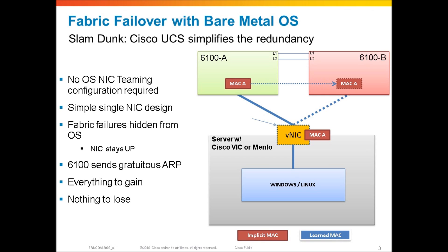All of that goes away now with Fabric Failover. We can provision a single VNIC, a single adapter to this server. So you've got a Windows or Linux machine with a single 10 gig adapter and the high availability is absorbed into UCS with Fabric Failover. You've got a MAC address on that adapter — MAC address A. MAC address A is an implicit MAC on the Fabric Interconnect, meaning it was authoritatively known — defined in the service profile used to configure this server. It's not a MAC address that was really learned by the Fabric Interconnect; it was just known when you instantiated the service profile.